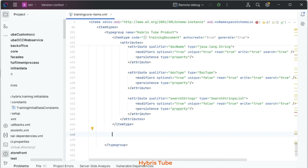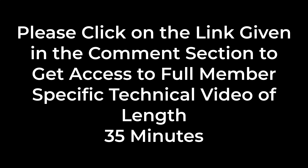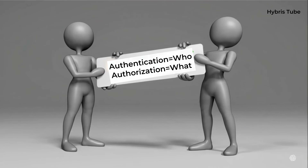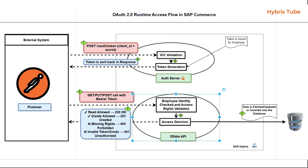To achieve this requirement, the first step is the definition of the item type in the training core items XML file. In short: authentication is equal to who, and authorization is equal to what. This is all about connecting the external system with the Hybris system using the integration concept via OAuth2 authentication and authorization.